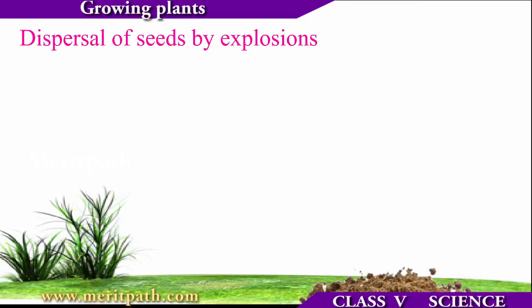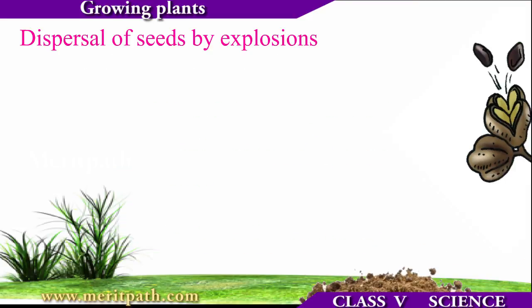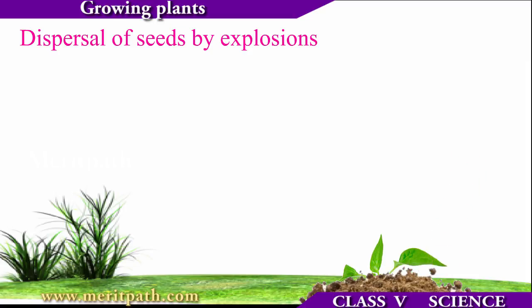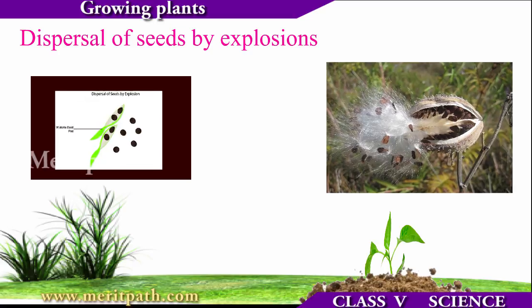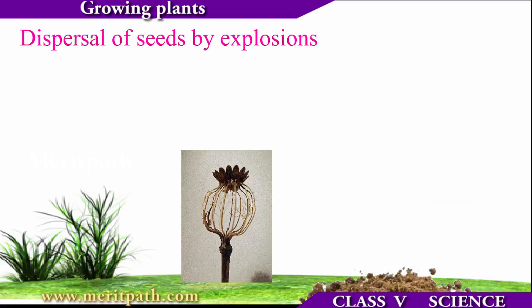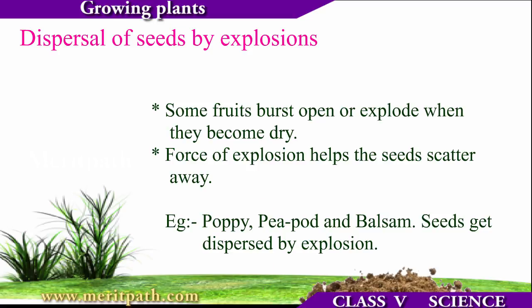Dispersal of seeds also occurs by explosion. Some fruits, when they become dry, explode. This force of explosion helps the seeds to scatter. An example is the poppy seed.